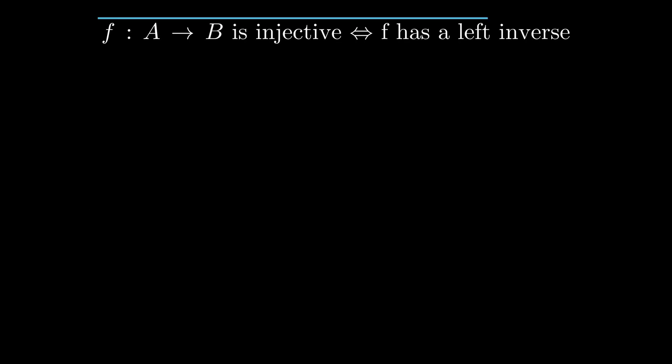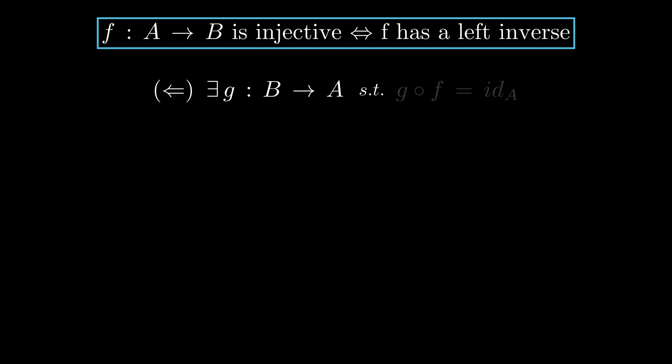To have a left inverse means that there exists a function G with this property. It is a left inverse because it is applied on the left. To prove injectivity, take two distinct elements from A. G composed with F is identity. Alpha is not equal to alpha prime by our choice. But alpha prime is the same as this.